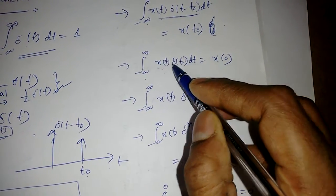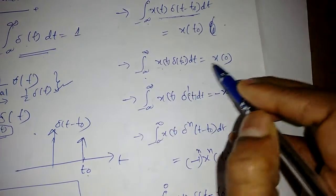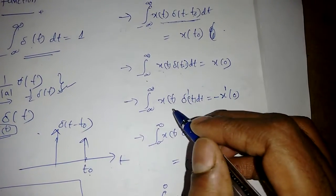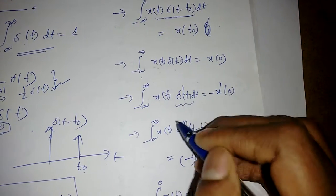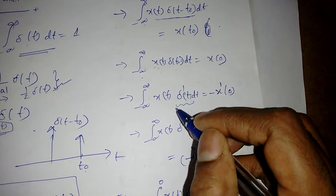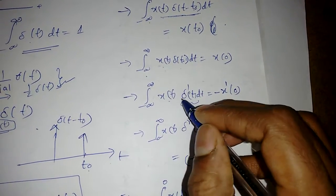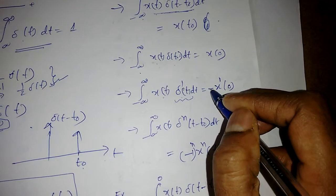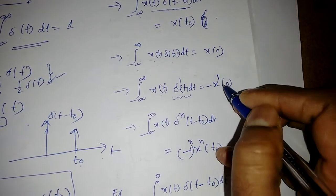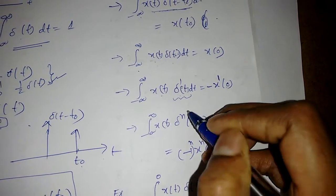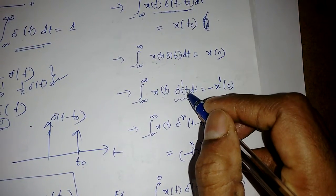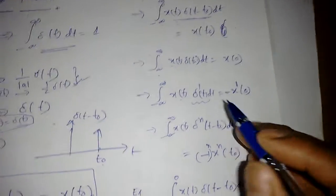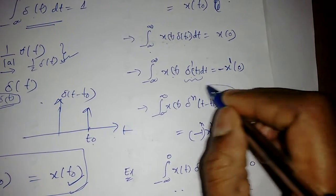One more property: if the delta function is differentiated once, then the integral of x(t)·delta'(t) dt equals minus x'(0). More generally, for t - t₀ in place of t₀ equal to 0, the same form applies.